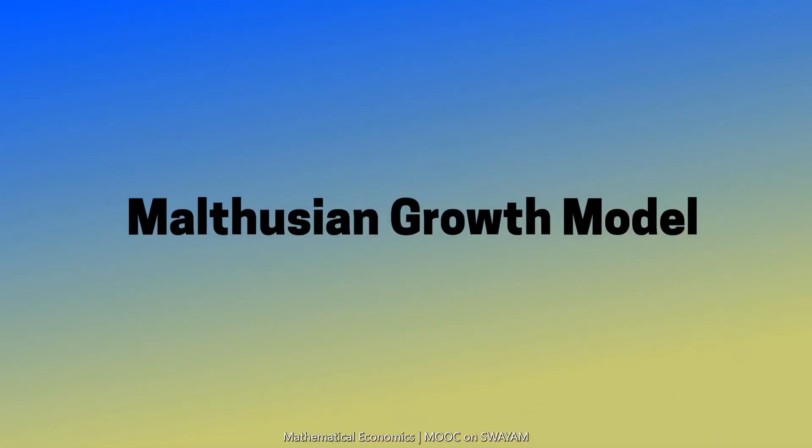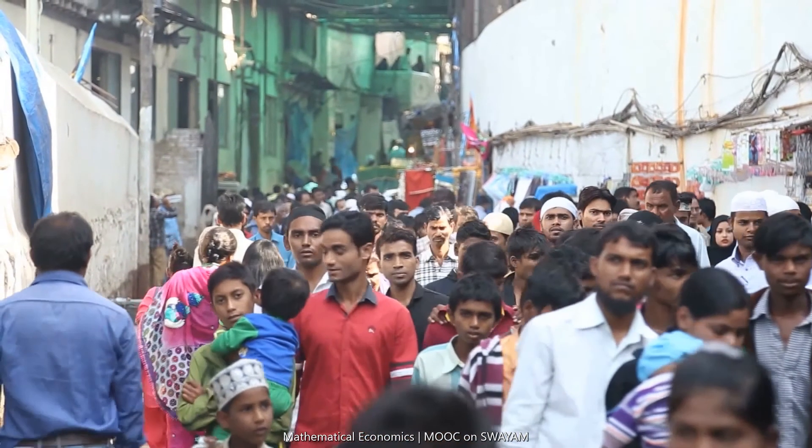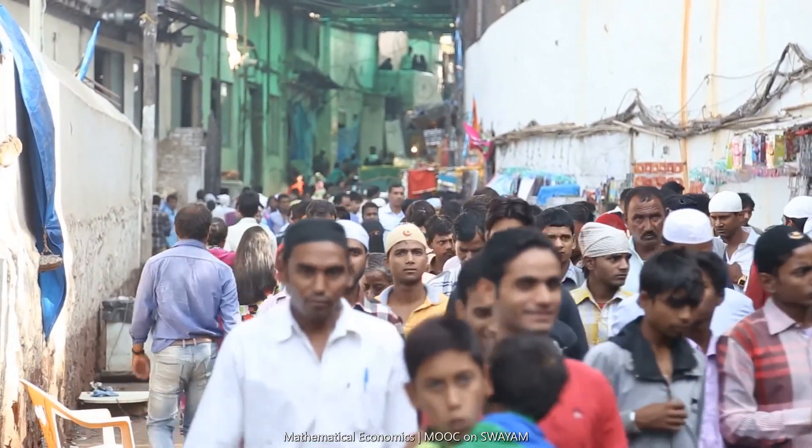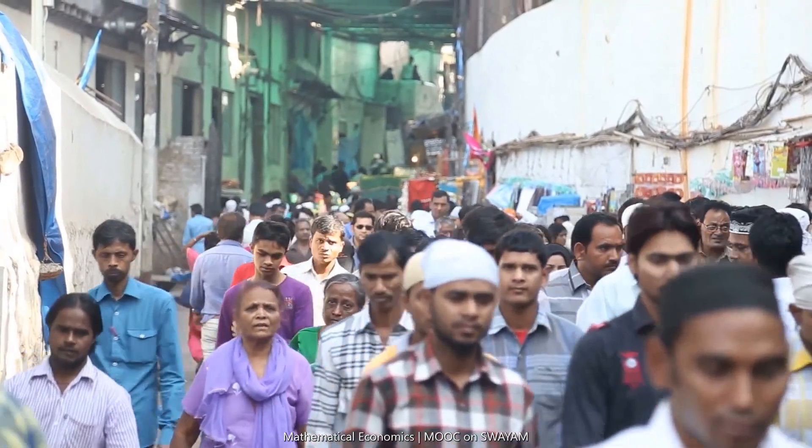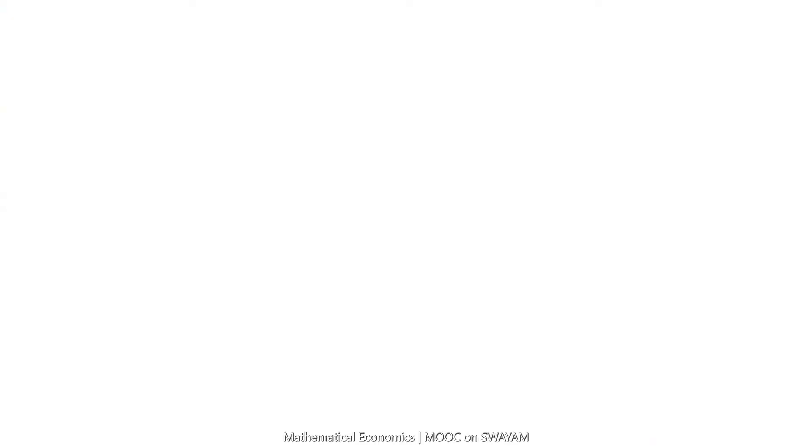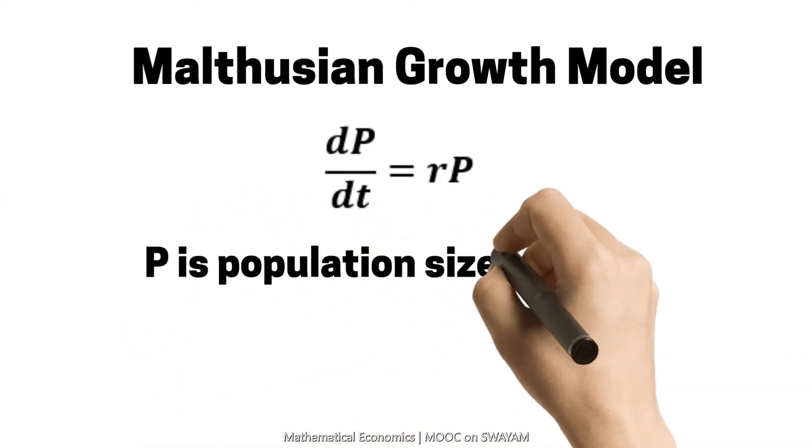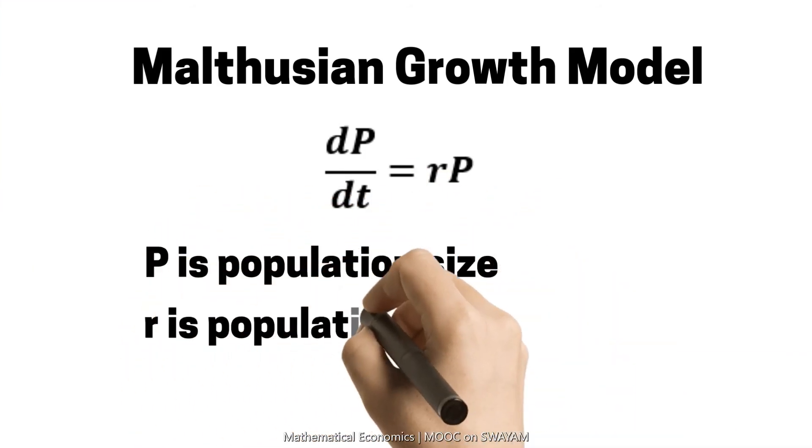The Malthusian growth model is a model of exponential growth regarded in the field of population ecology as the first principle of population dynamics. P is population size, r is population growth rate, and t is time.